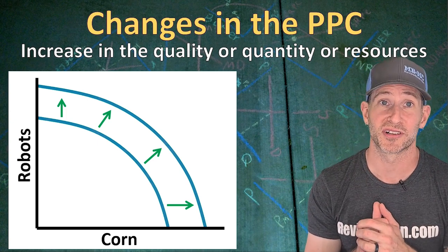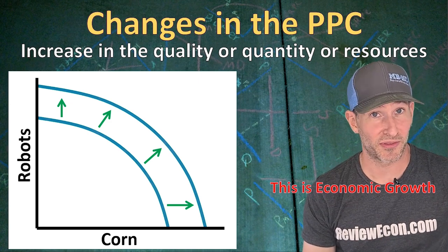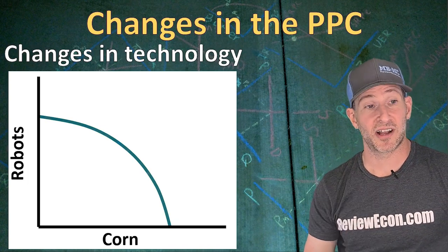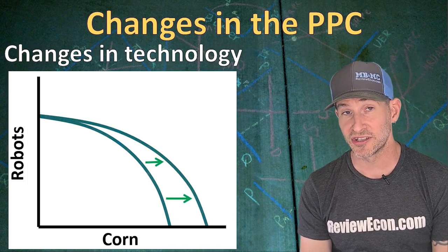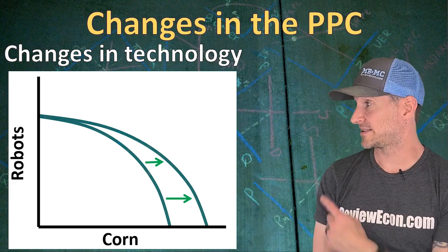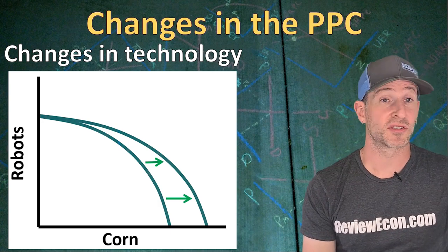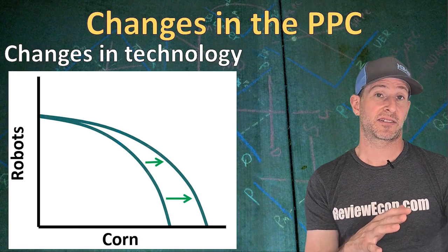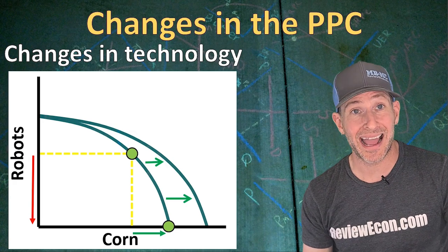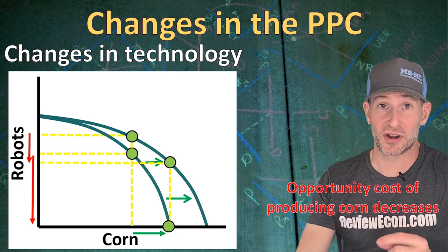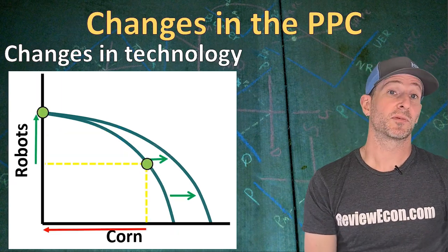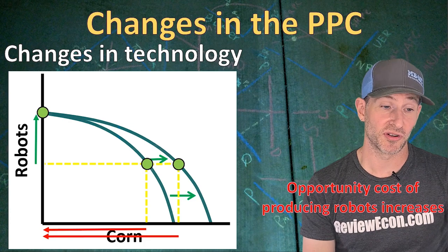More skilled workers are more productive workers. In macroeconomics, we call an outward shift economic growth — it means we can produce more goods and services than we could before. If we have a change in technology that only impacts the production of one of the goods, we're going to see a kick outward of that side of the curve. In this case, there's an increase in technology for corn production. That change in technology changes the Opportunity Cost — the Opportunity Cost of producing corn has just decreased as a result, while the Opportunity Cost of producing robots has just increased as a result of that change in technology.